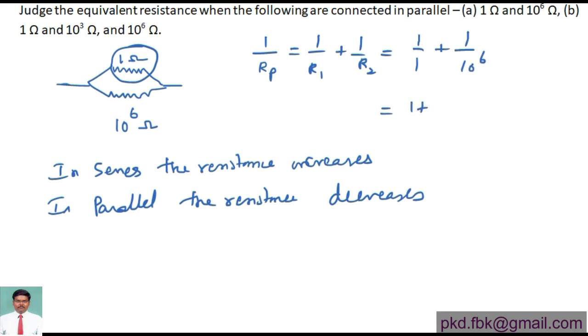It's going to be 1 plus if you expand this 10^6 and divide by 1, we are having a value 0.000001. If I add this, 1.000001 - this is the value of 1/Rp. So Rp equals 1/1.000001. If I divide this value, I am getting 0.9999Ω as the equivalent.